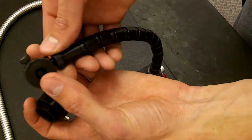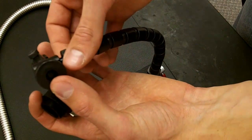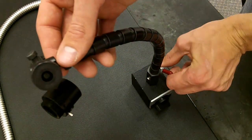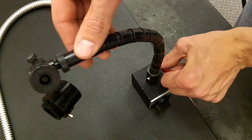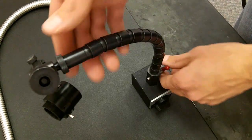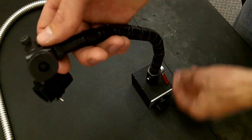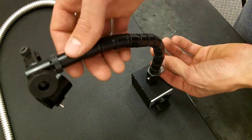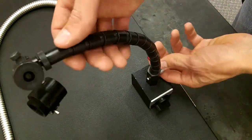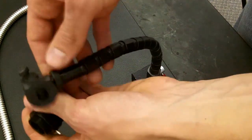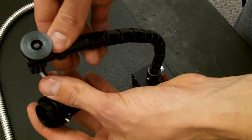Then this knob is the fine adjust for the rigidity of the arm. Tightening it makes the arm more rigid and loosening it makes the arm less rigid. Depending on your preference and what you need you can adjust the rigidity of the arm.